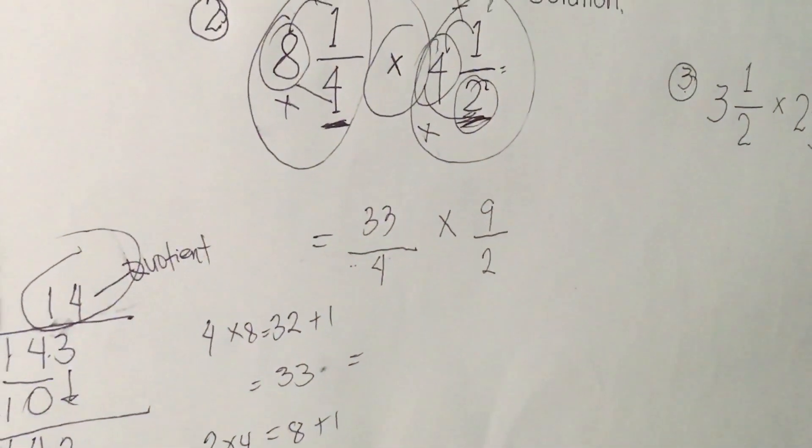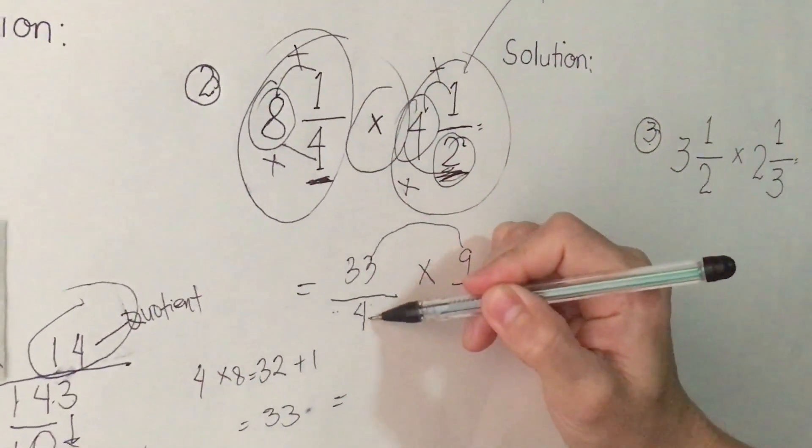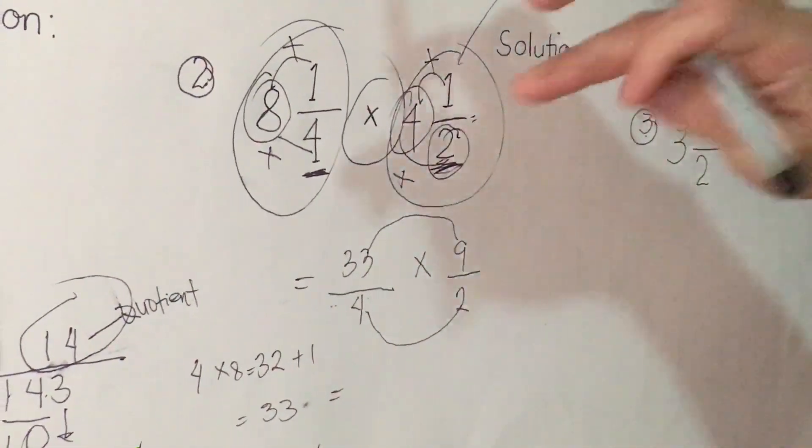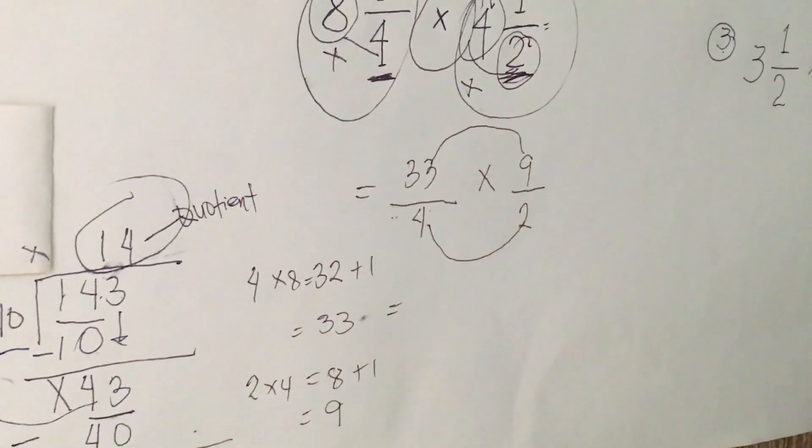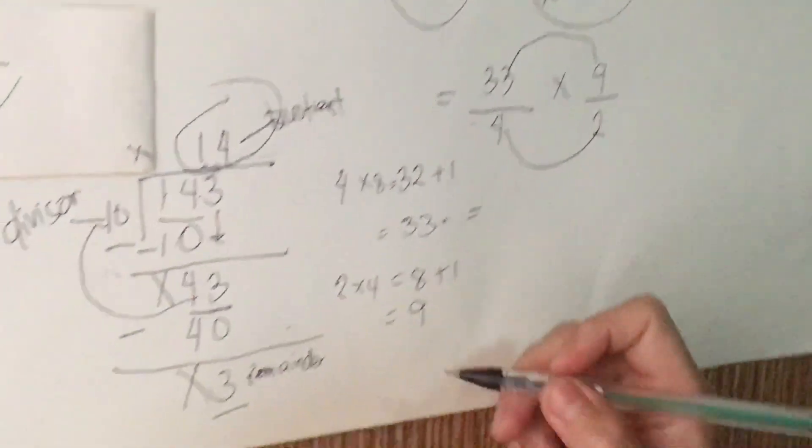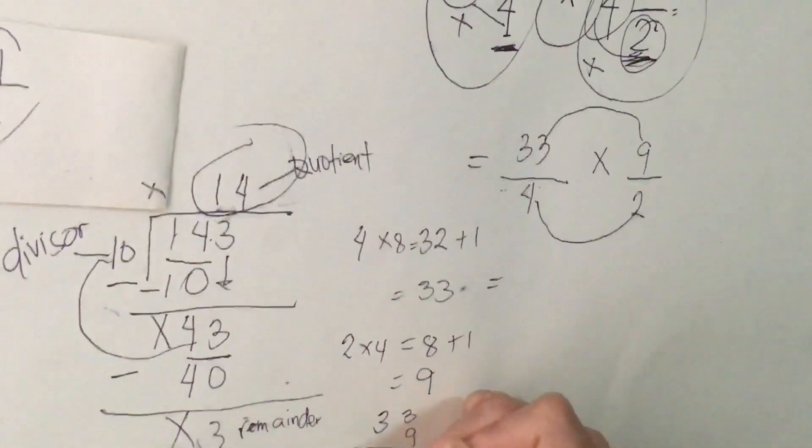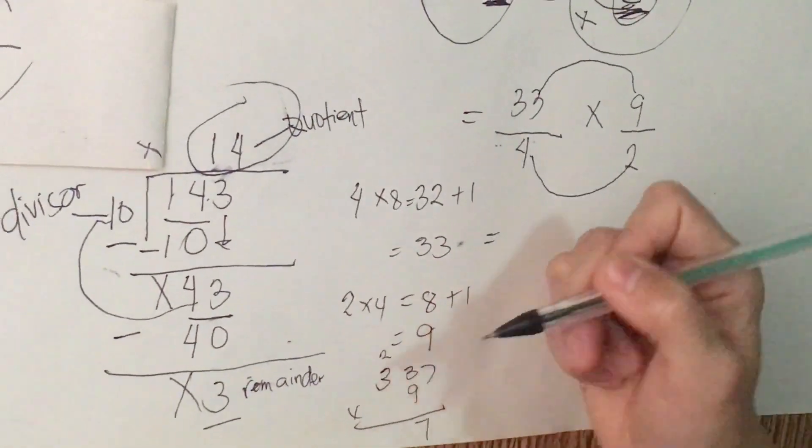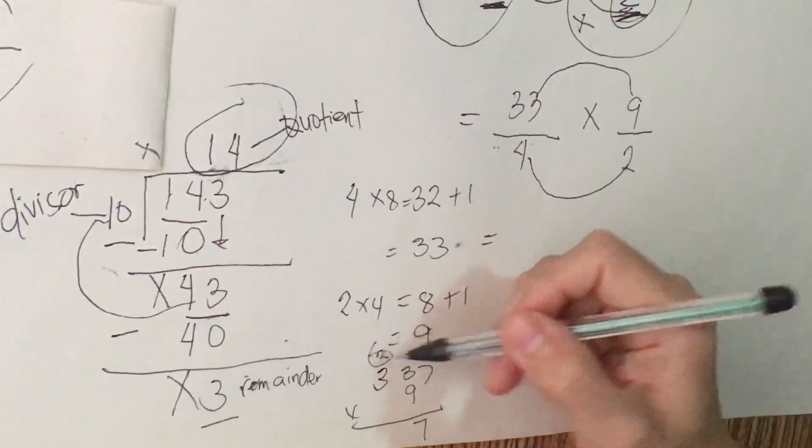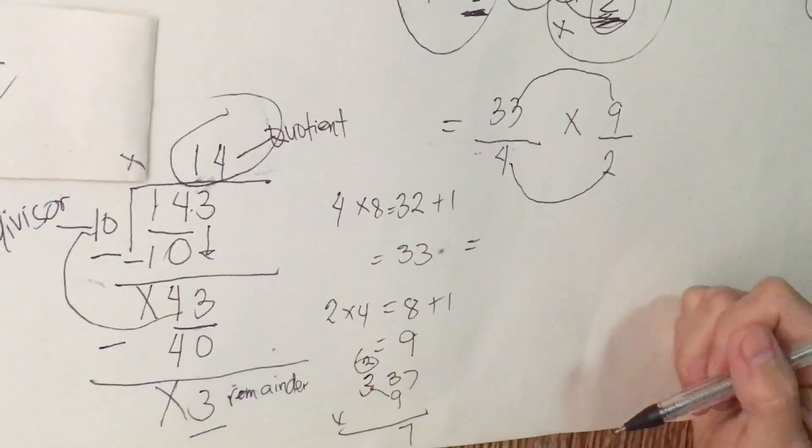Next thing we do is simply, it's a very quickest way for 33 times 9 and 4 times 2, which is numerator to numerator and denominator to denominator. Here we go. We're going to solve it. So 33 times 9. 9 times 3, 27. Please follow 2, we're going to group 2 here. 3 times 9, that's 27, plus 2.